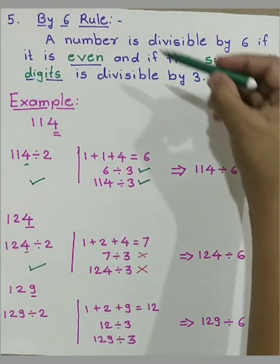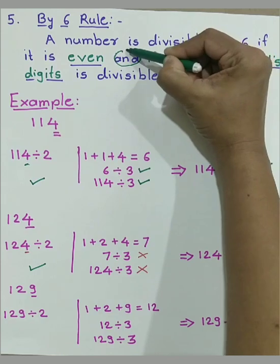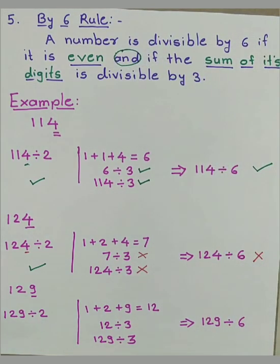Let's check one more example. 129. As 129 is not an even number, it can't be divided by 2. And the sum of digits 1 plus 2 plus 9 is equal to 12. 12 can be divided by 3. And so as 129 can be divided by 3. Here also one test fails, means 129 cannot be divided by 6.